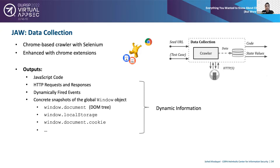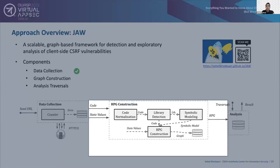For each web page found, the graph construction component of JAW instantiates a property graph given the JavaScript code and state values. JAW first creates a normalized JavaScript program by concatenating code segments inside script tags and inline scripts, preserving execution order. Using the third-party library detector module, JAW symbolically models each library, and when a symbolic model for a given library already exists, it reuses the model as a proxy for the analysis. Given the library symbolic model, normalized JavaScript program, and state values, JAW creates a graph called a Hybrid Property Graph, or HPG, which can be traversed to identify client-side vulnerabilities like client-side CSRF.